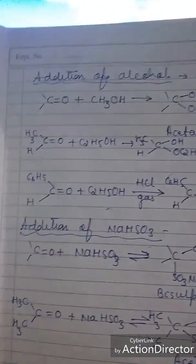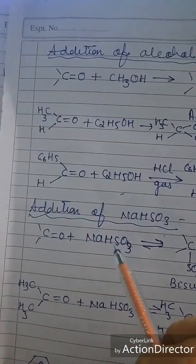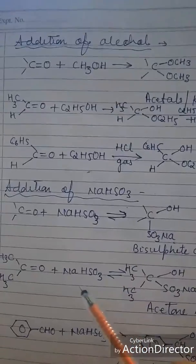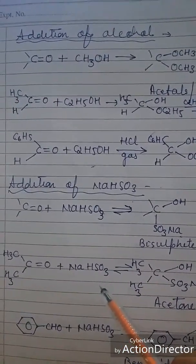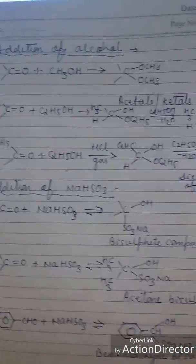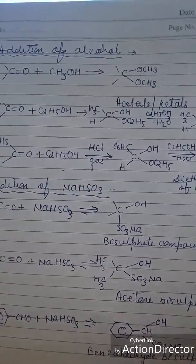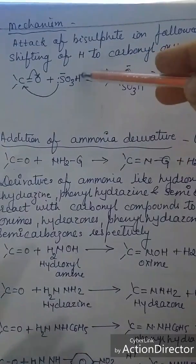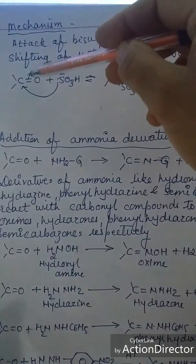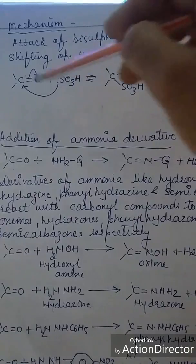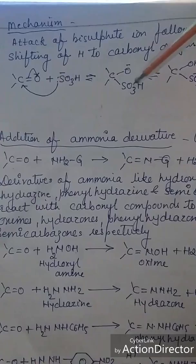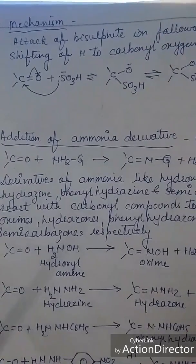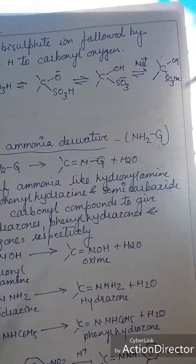Next is the addition of sodium bisulfite. The carbonyl group reacts with NaHSO3 to give a bisulfite addition compound. Acetone gives acetone bisulfite, and benzaldehyde gives benzaldehyde bisulfite. The mechanism involves nucleophilic attack of the bisulfite ion on the carbonyl carbon, followed by shifting of hydrogen to the carbonyl oxygen, rearrangement, and sodium coordination to give the bisulfite compound.